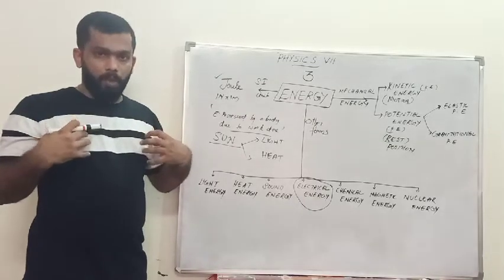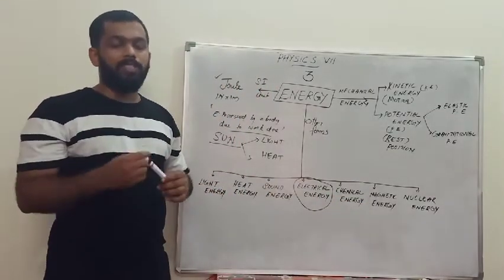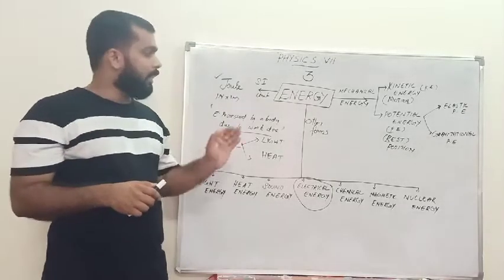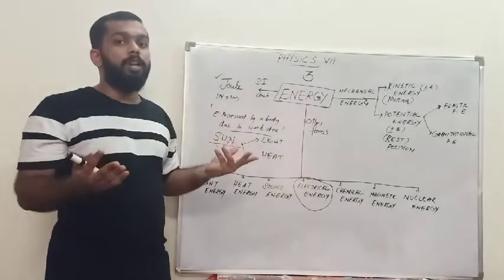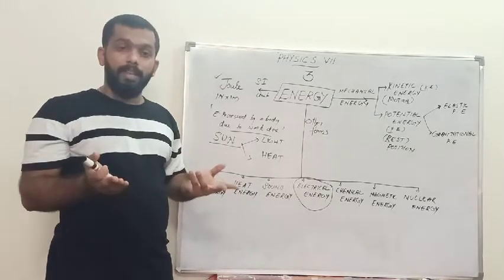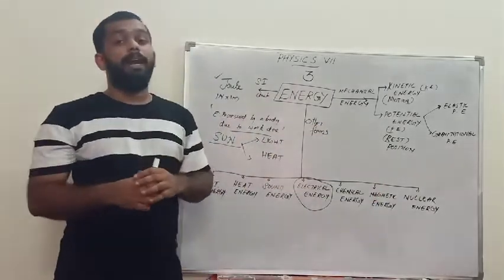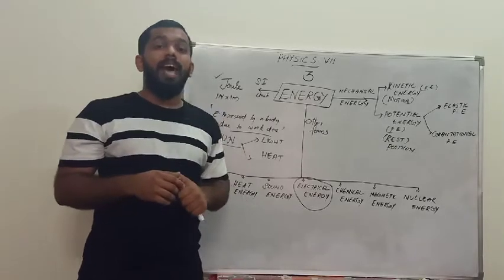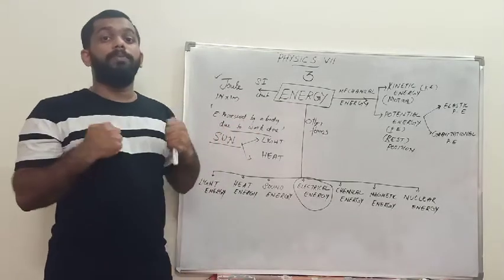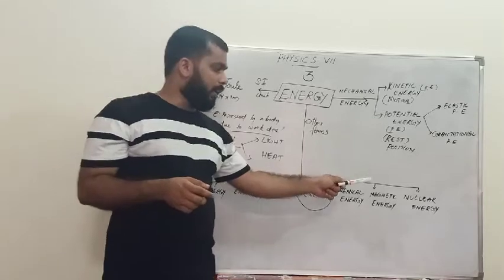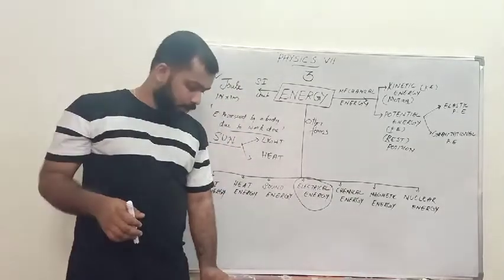Magnetic energy: when an object is placed near a magnet it gets attracted — force is applied and the object moves toward the magnet, so work is done. This is magnetic energy. Finally, nuclear energy: atoms have a nucleus, and when the nucleus is split into two pieces, a large amount of energy is released. This is called nuclear energy. The atom bomb or nuclear bomb is an example of nuclear energy.